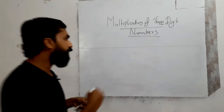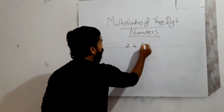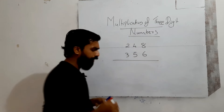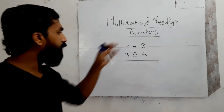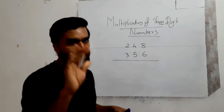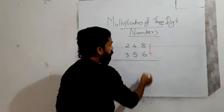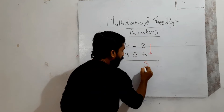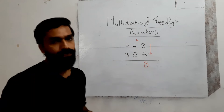So the second example: 248 into 356. We have to multiply these two three-digit numbers. First step: multiply the unit places. 8 into 6 is 48. Write 8, carry over 4.